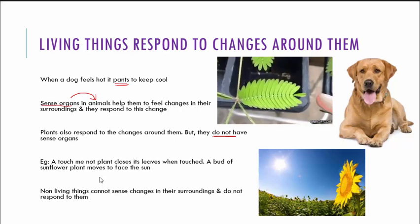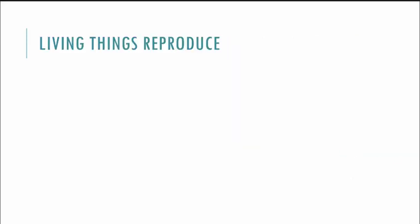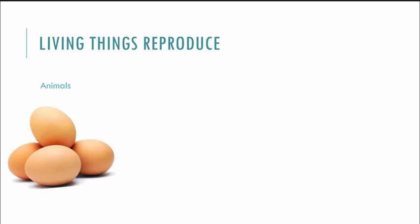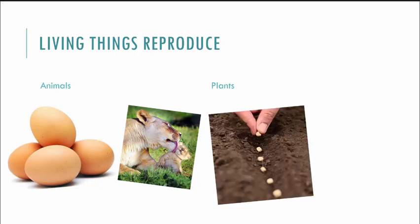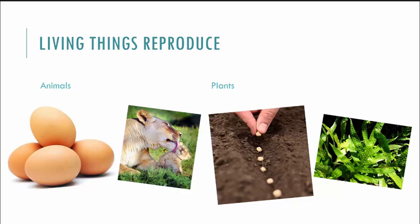Let's see how living things will reproduce. Life on earth continues because all living things produce young ones of their own kind. If you see animals, they reproduce by either laying eggs or by giving birth directly. Plants do not lay eggs or give birth — they will reproduce either with the help of seeds or with the help of spores. In the case of ferns, the back side of the leaf has small dotted structures called spores, and ferns will reproduce by the use of spores.